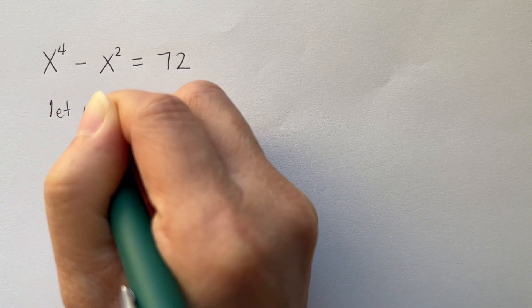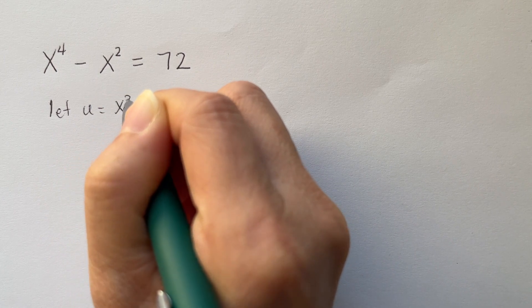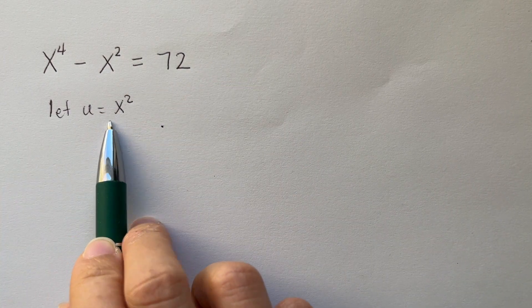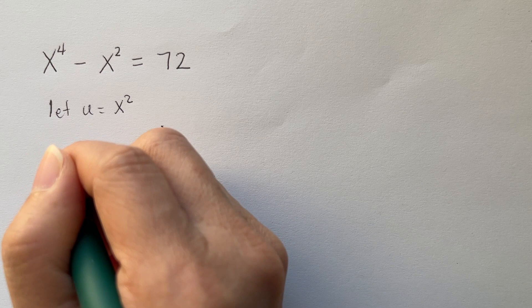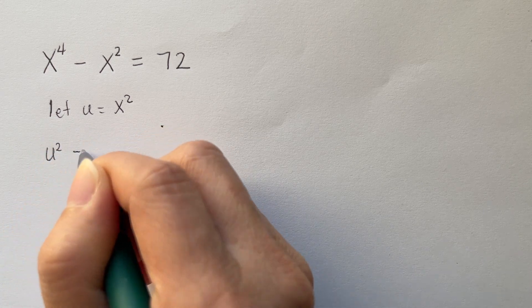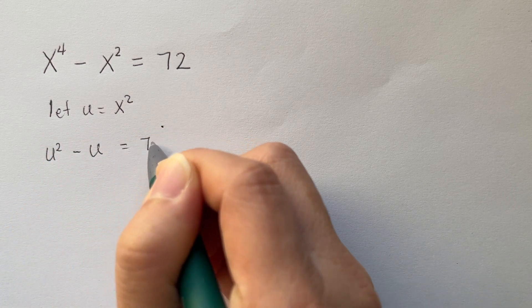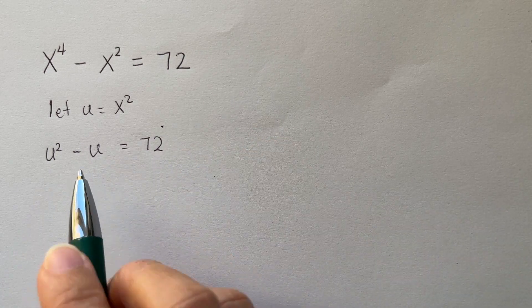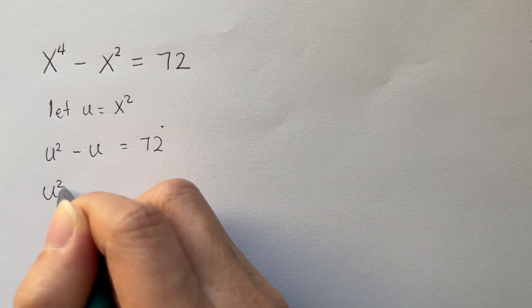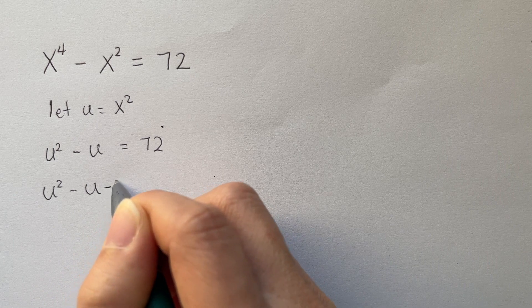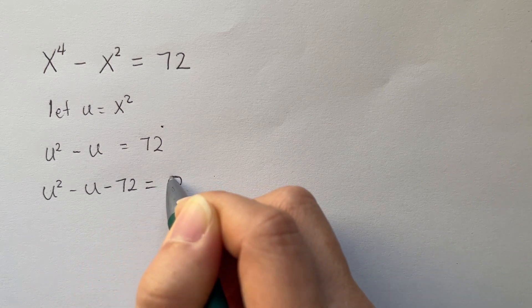We're going to let u equal to x squared. Now we're going to take this substitution. This becomes u squared minus u is equal to 72. Now we can subtract 72 on both sides. u squared minus u minus 72 is equal to 0.